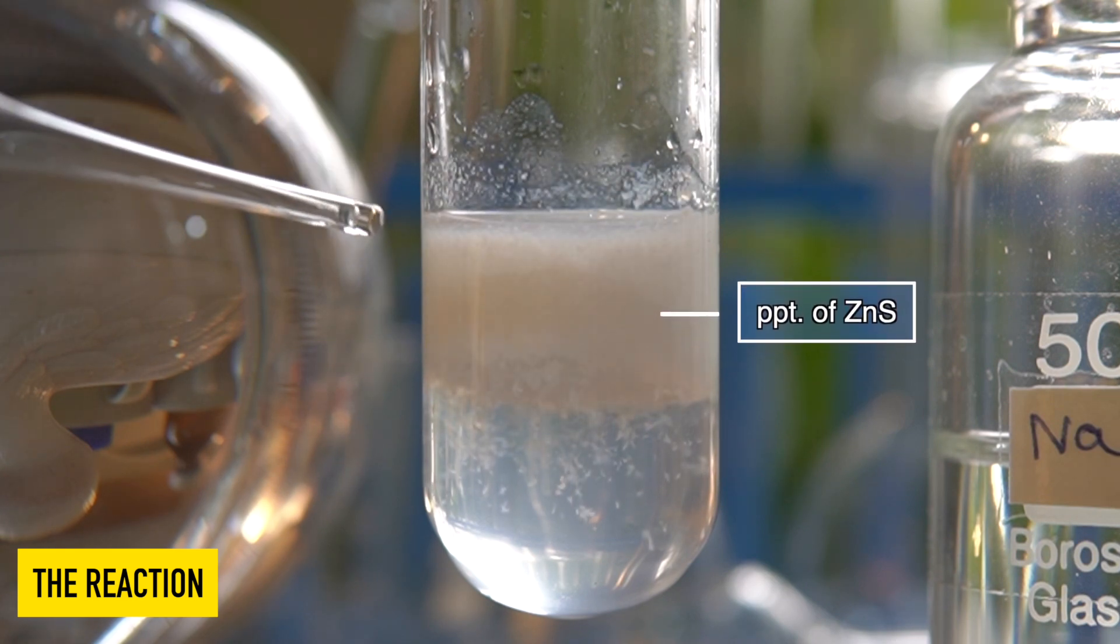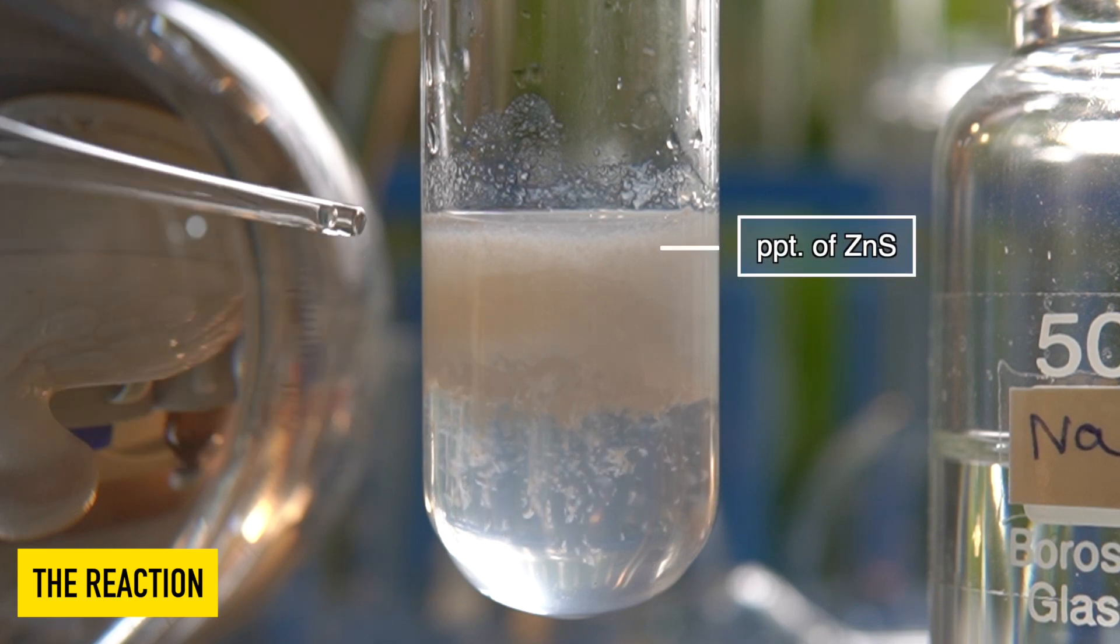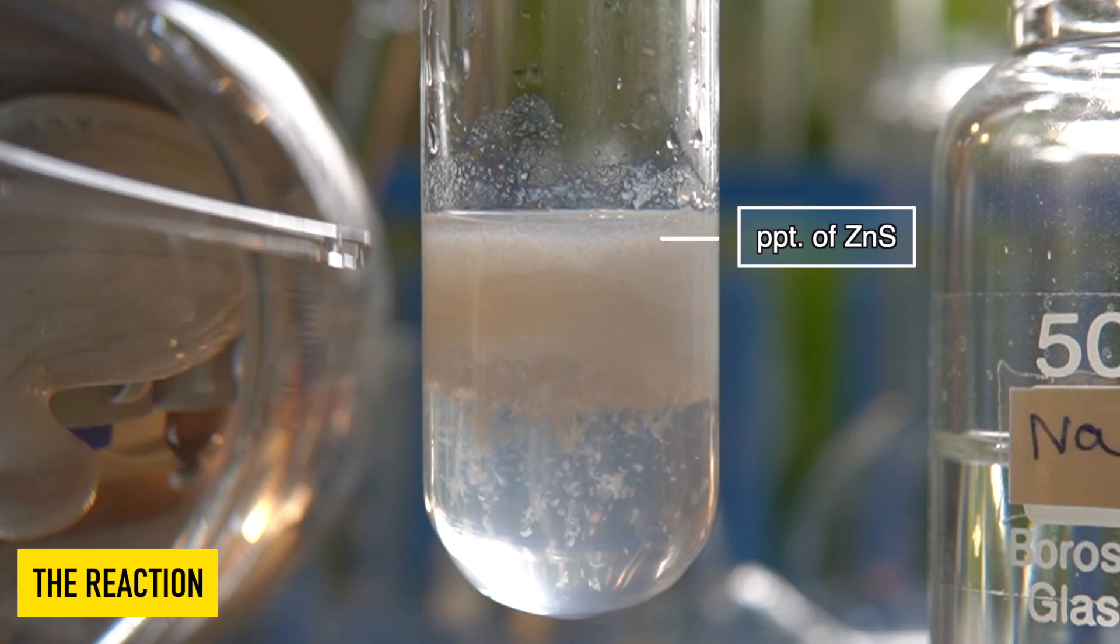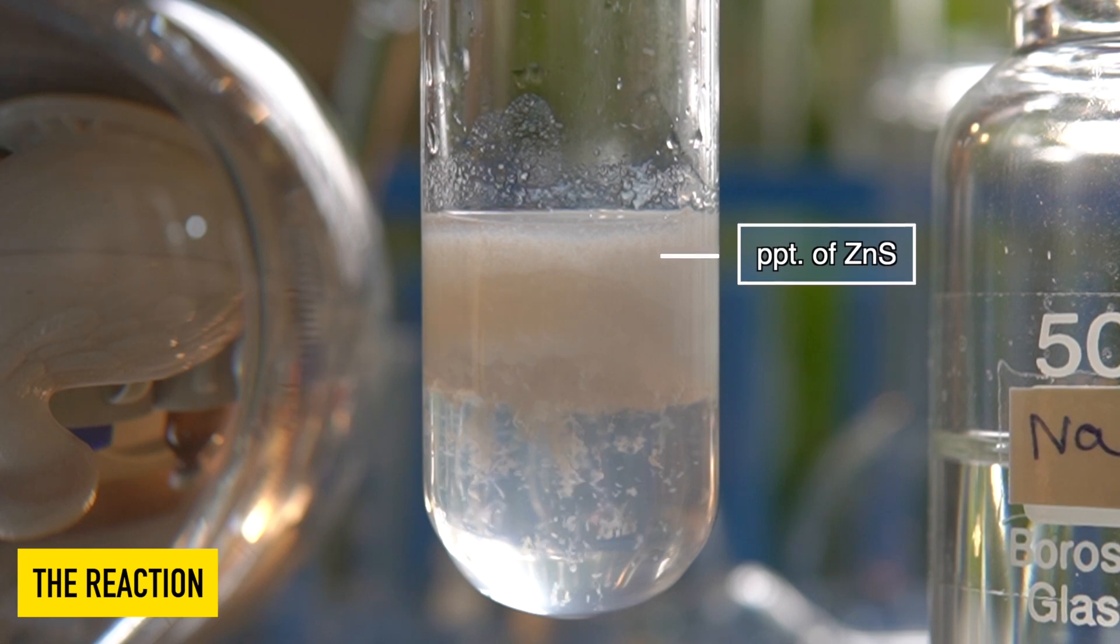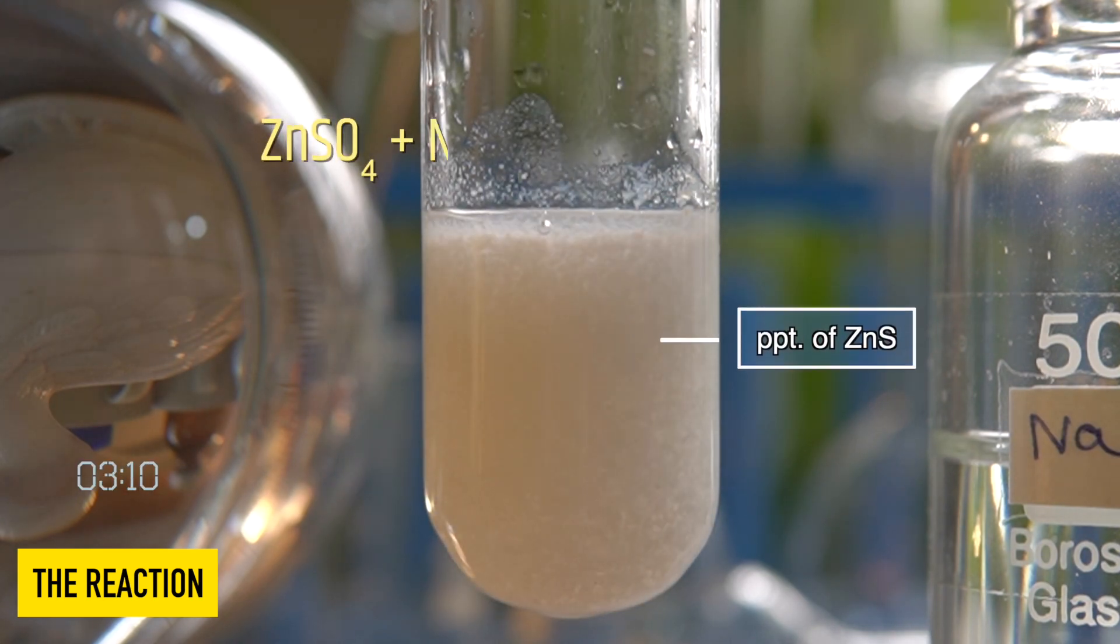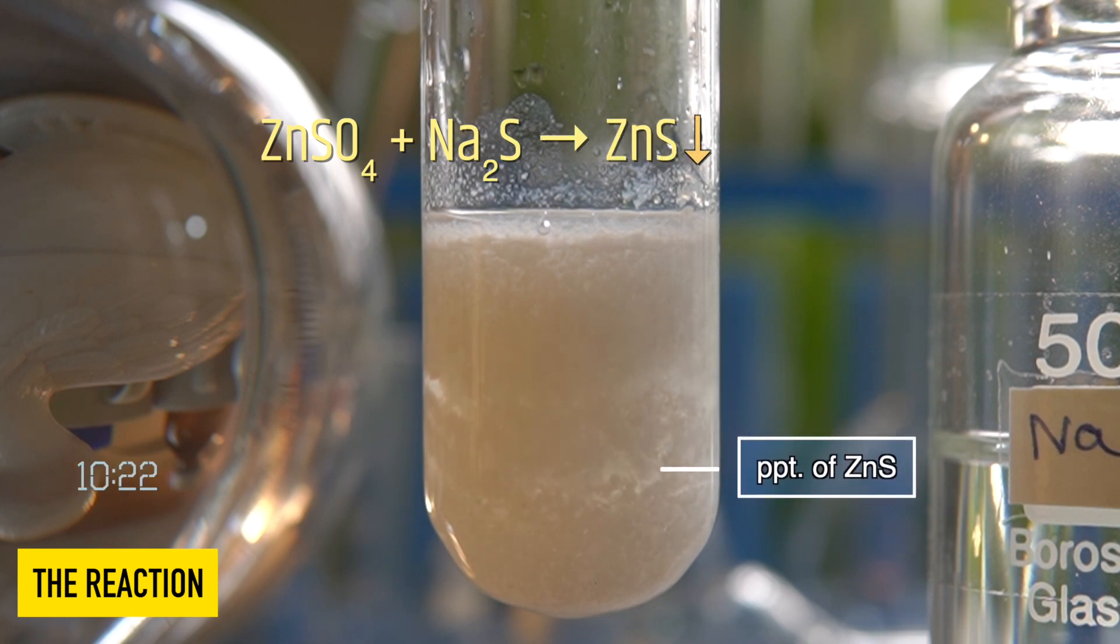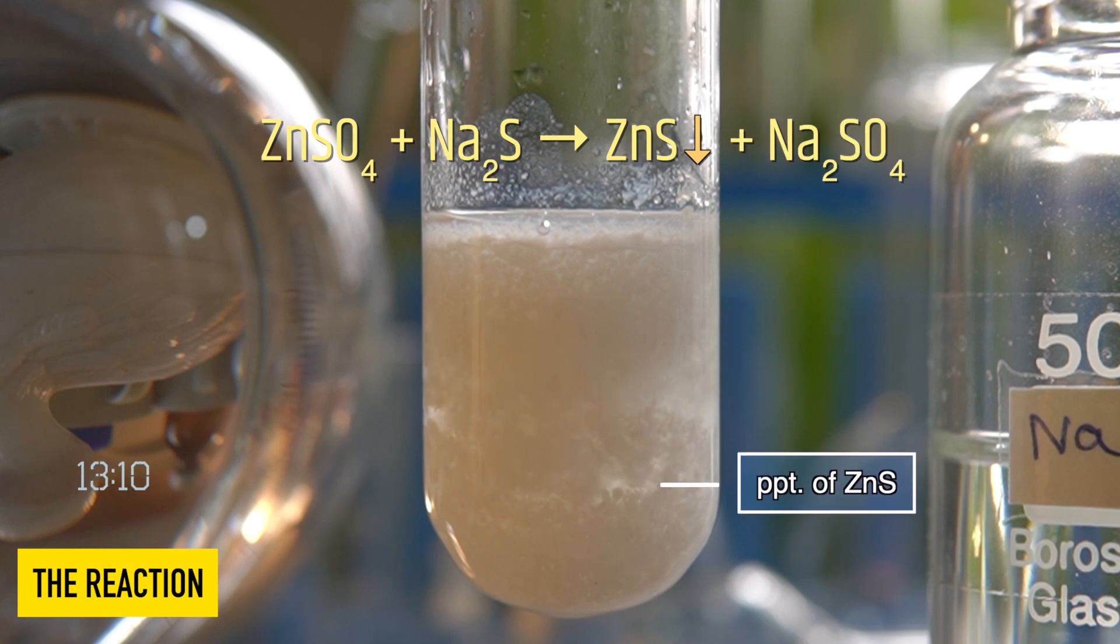The white insoluble precipitate that has been formed inside the test tube is nothing but zinc sulfide. So in this reaction, aqueous solution of zinc sulfate reacts with aqueous solution of sodium sulfide to produce a white precipitate of zinc sulfide along with sodium sulfate.